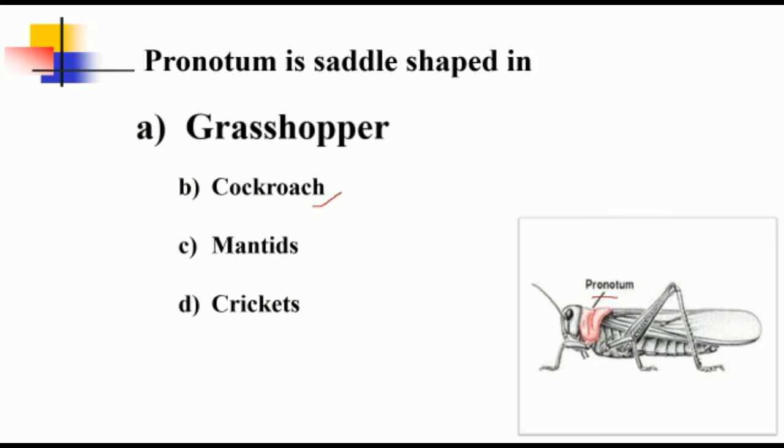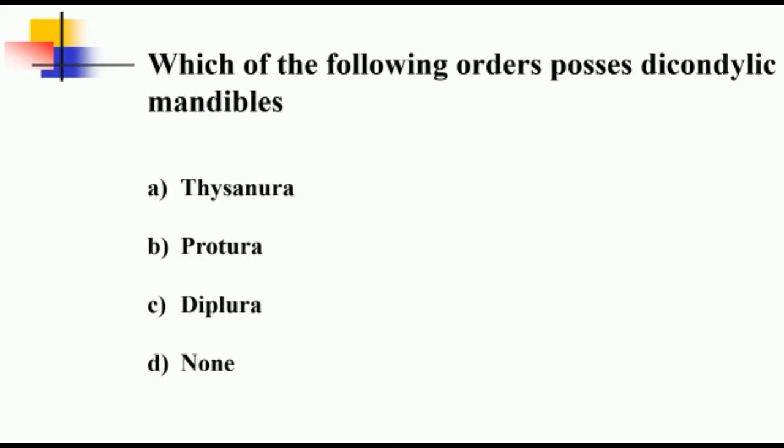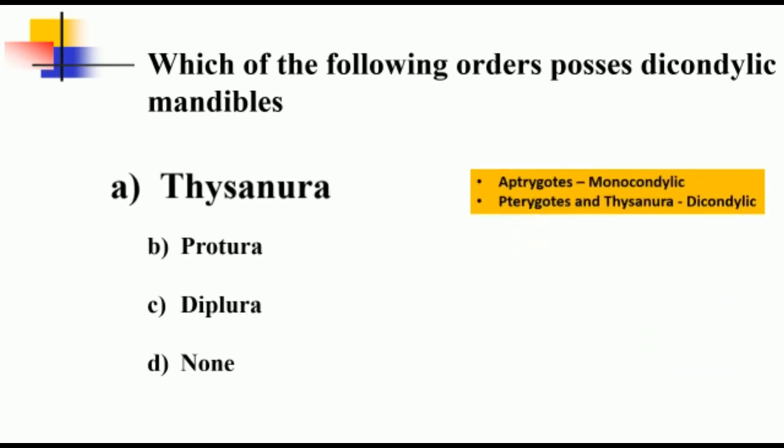Which of the following orders possess dicondylic mandibles? Thysanura. We know that all apterygotes are monocondylic and pterygotes are dicondylic, but Thysanura is an exception—being an apterygote, it possesses dicondylic mandibles. Condyle is the point of articulation or attachment with the insect head, and dicondylic means that each mandible is articulated to the head region both anteriorly as well as posteriorly.